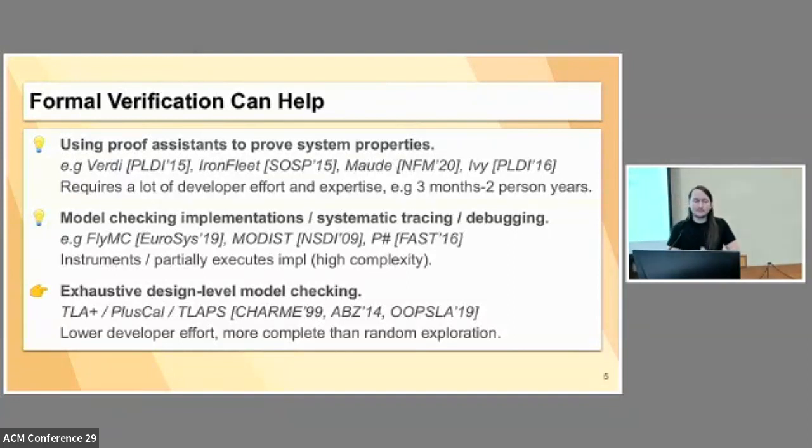What we're trying to do here, the verification tool chain we're using, is based on exhaustive design-level model checking. What this means is we're going to use TLA, PLUSCAL, or possibly TLAPS, not that we do so in practice here, to check an abstract specification of our system, like with the proof assistance. But instead, we do bounded exhaustive model checking, where we check every possible behavior up to a certain point, which can often find a lot of bugs, even if it's not exactly making a proof. Though to highlight, we do support explicit proofs, we just don't do it in this particular work.